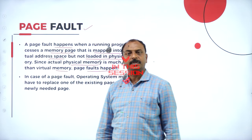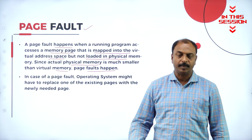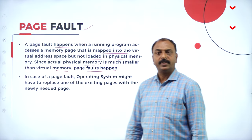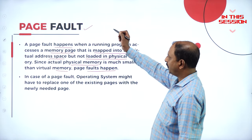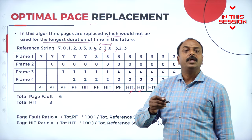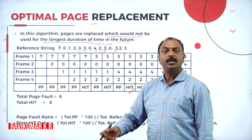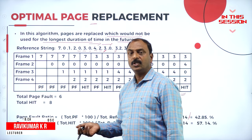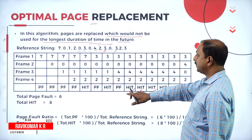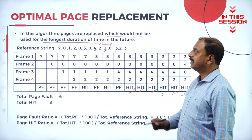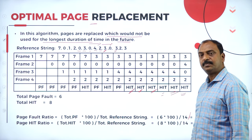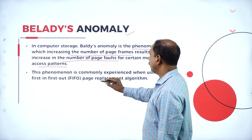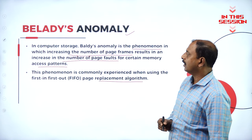When the requested page from the CPU is not available in main memory, it has to be called from secondary memory devices — that situation is called a page fault. The page which we may not use for a short time but may use for a long time has to be replaced with the new page. This is the concept of optimal page replacement, experienced while using the FIFO page displacement algorithm.